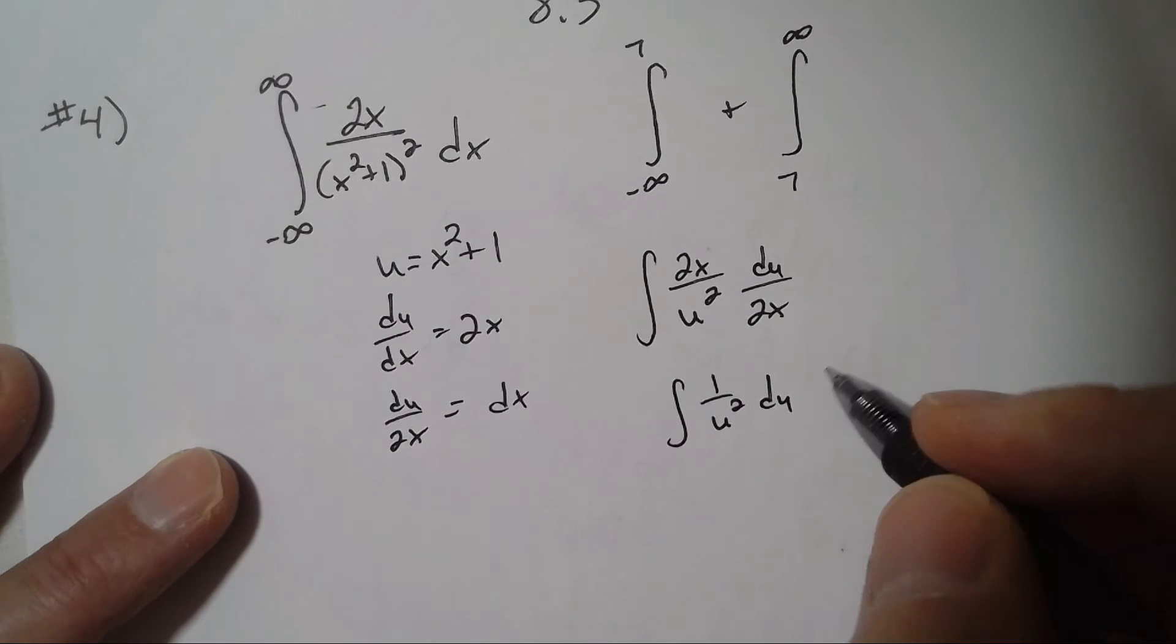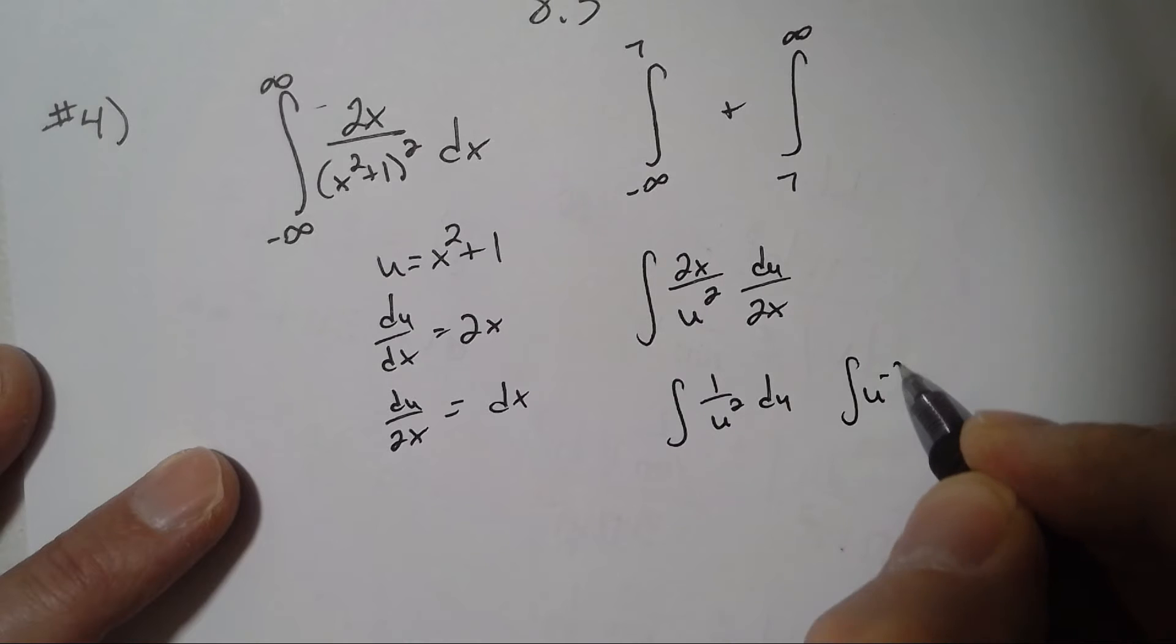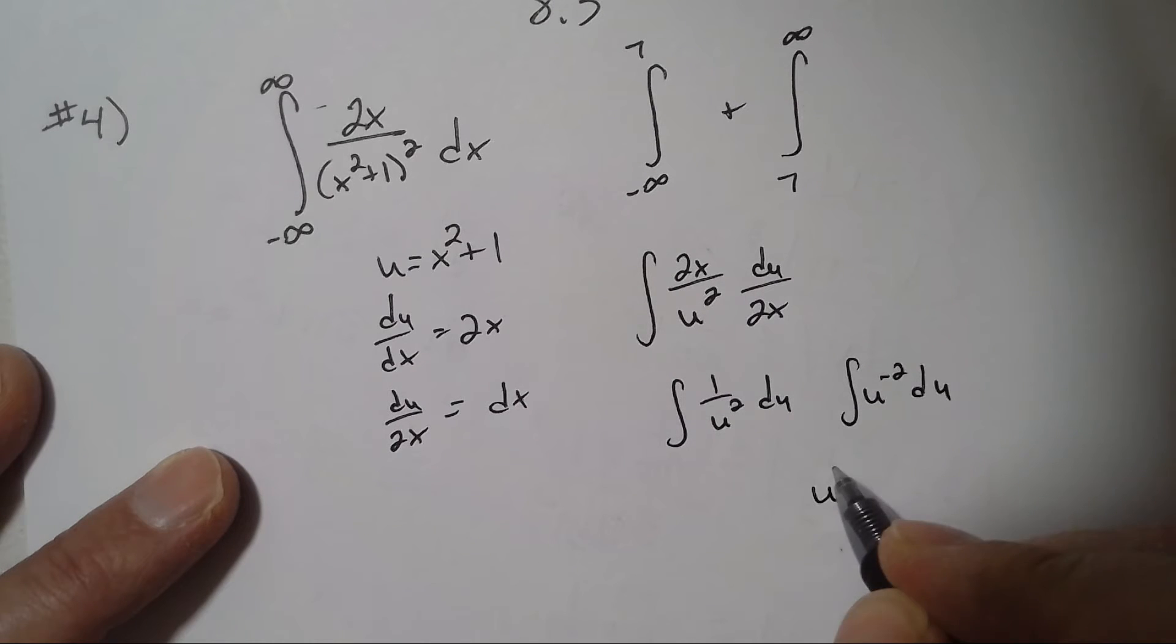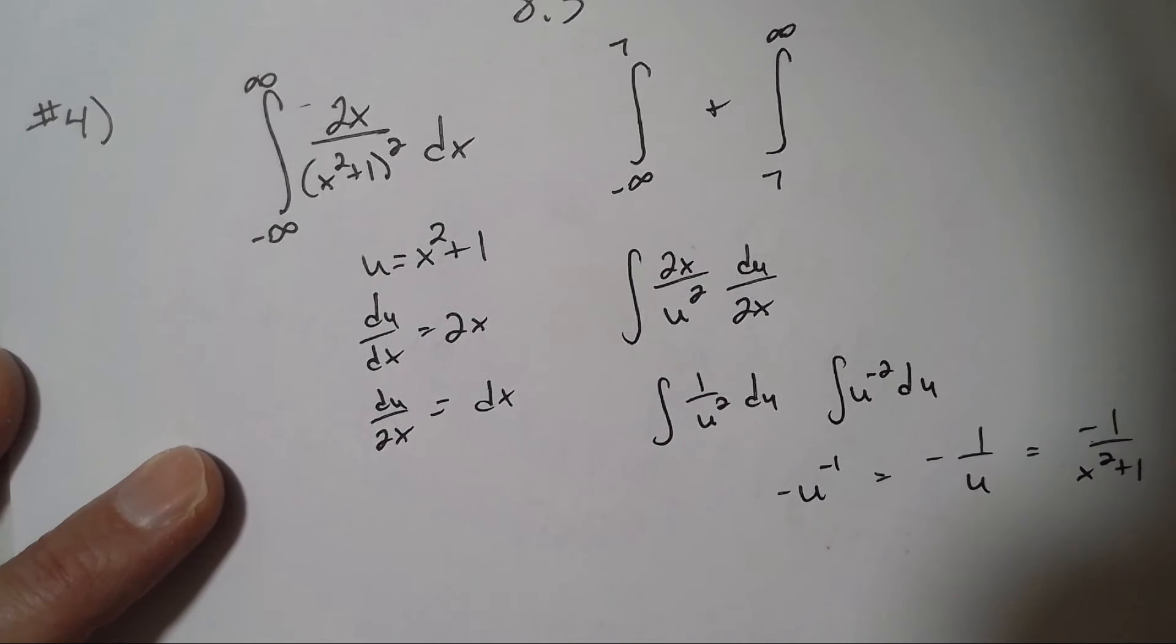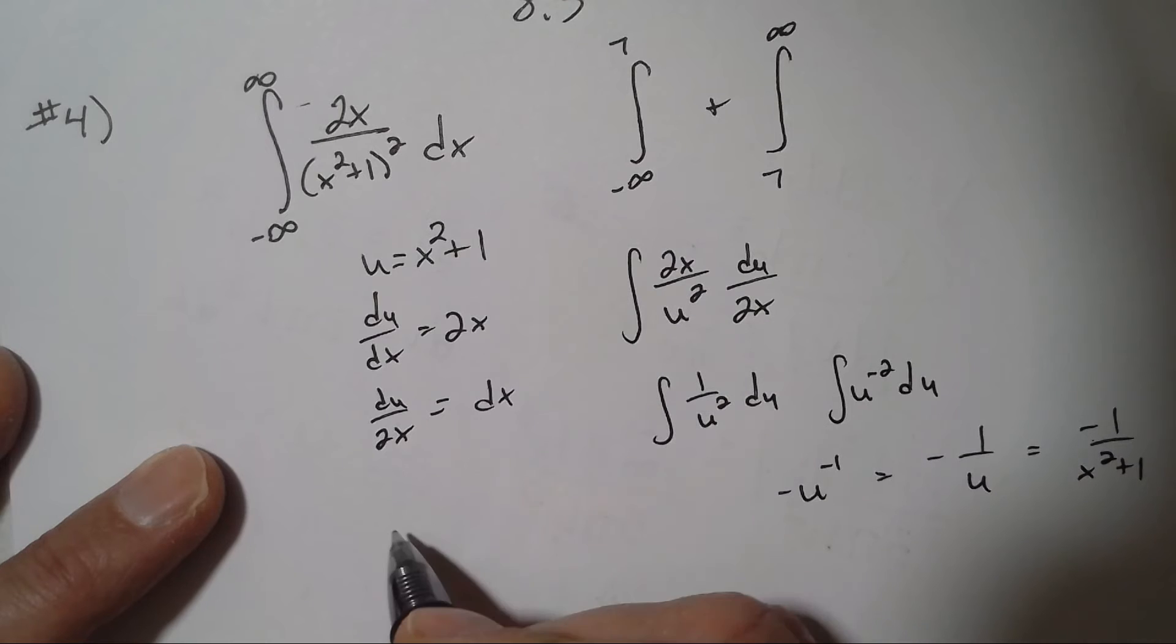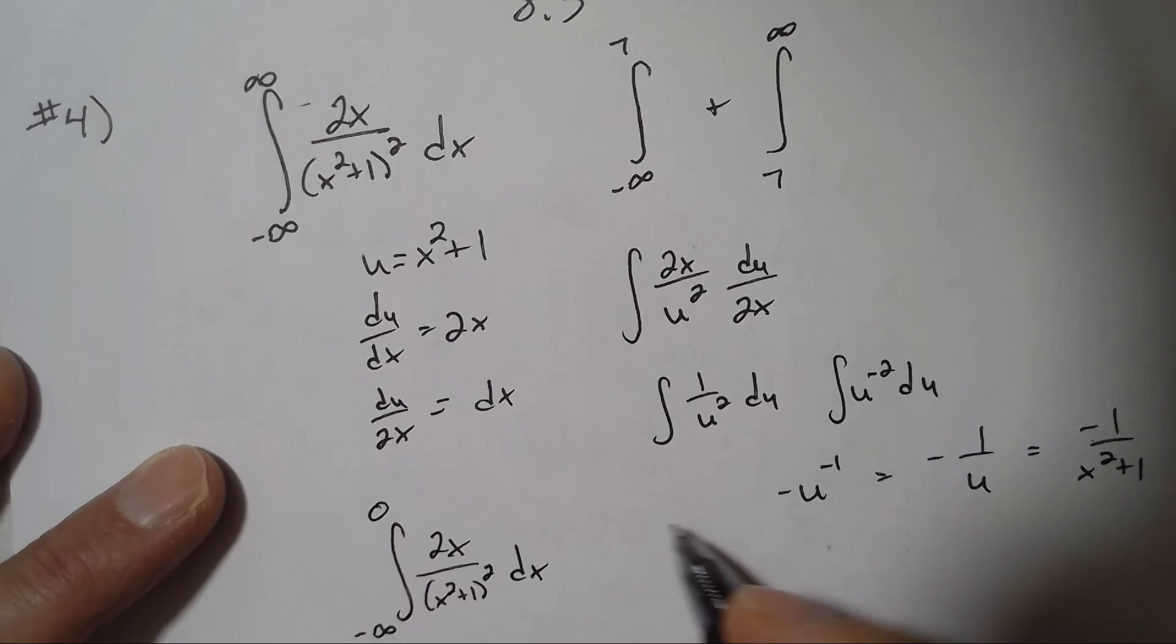The anti-derivative of u to the negative 2 is u to the negative 1 over negative 1. So we have negative 1 over u, which is negative 1 over x squared plus 1. All right, so we have our anti-derivative negative 1 over x squared plus 1. So we're going to integrate 2x over x squared plus 1 from negative infinity to zero and then from zero to infinity.